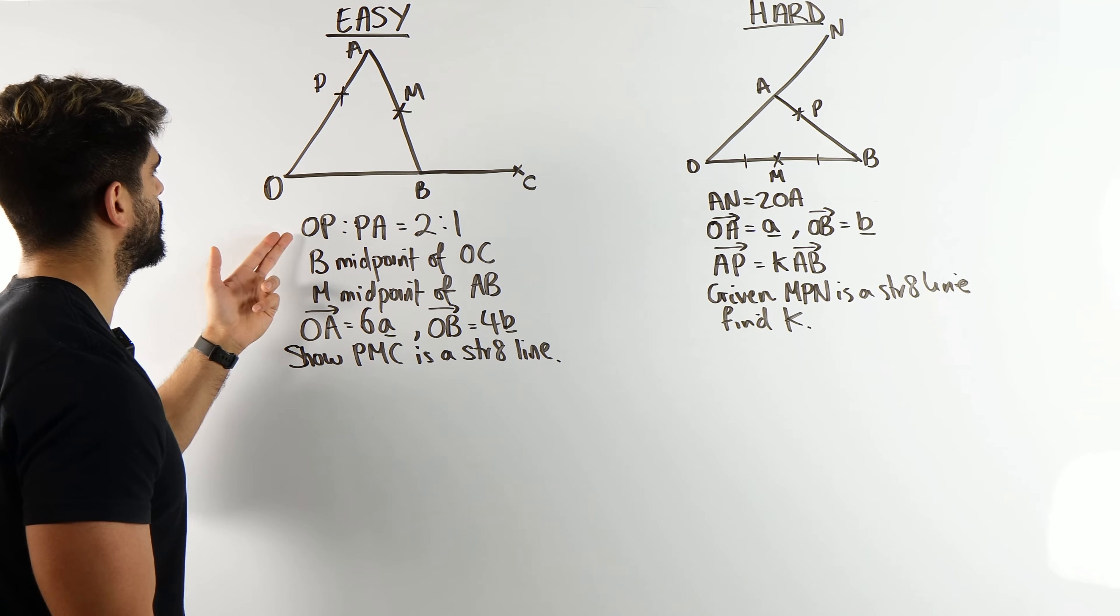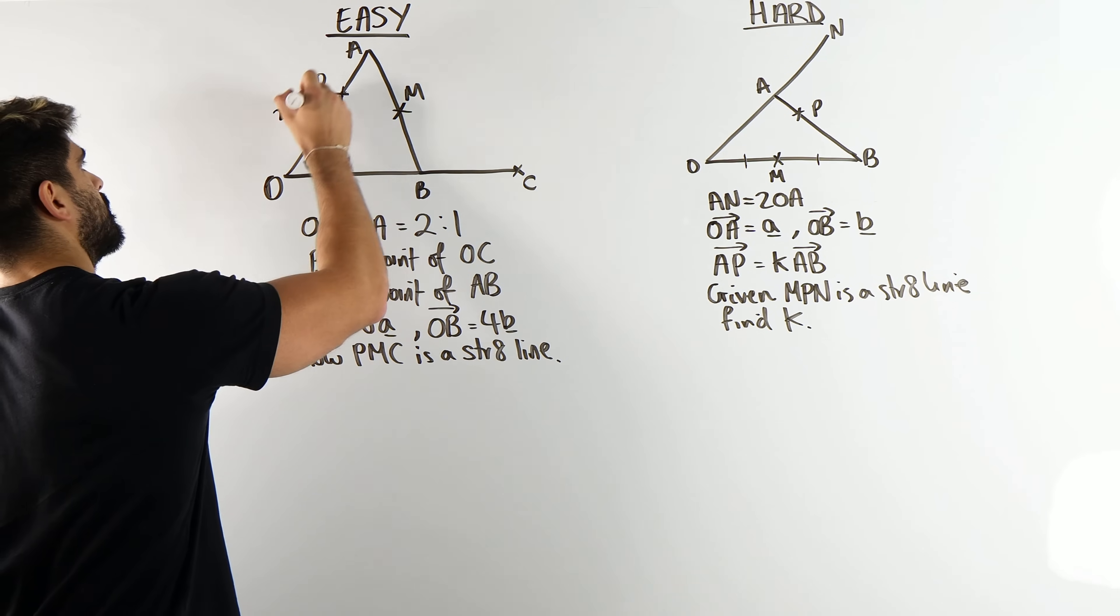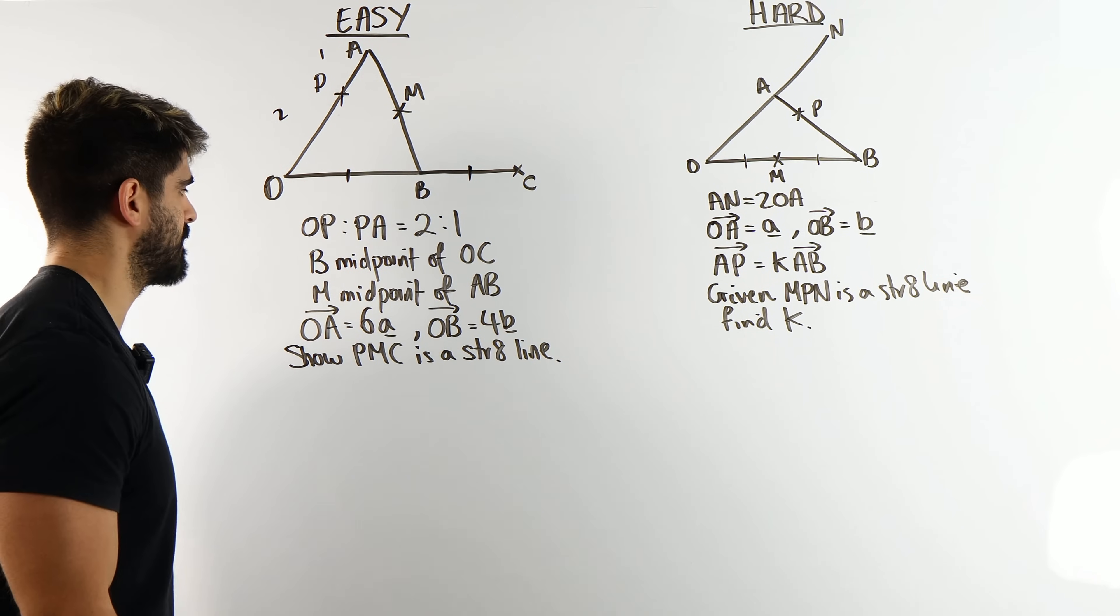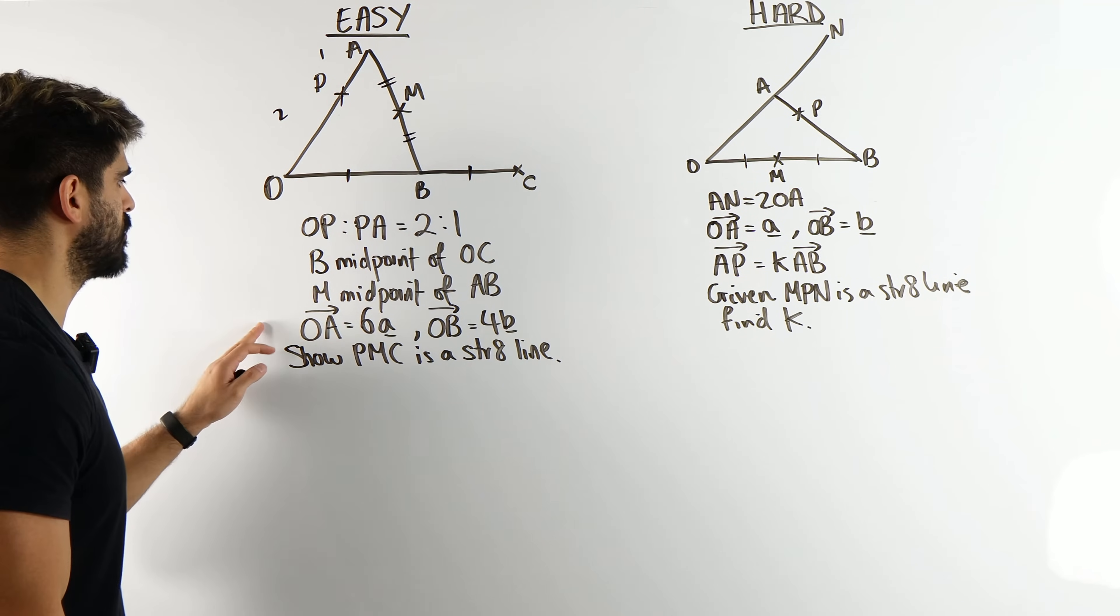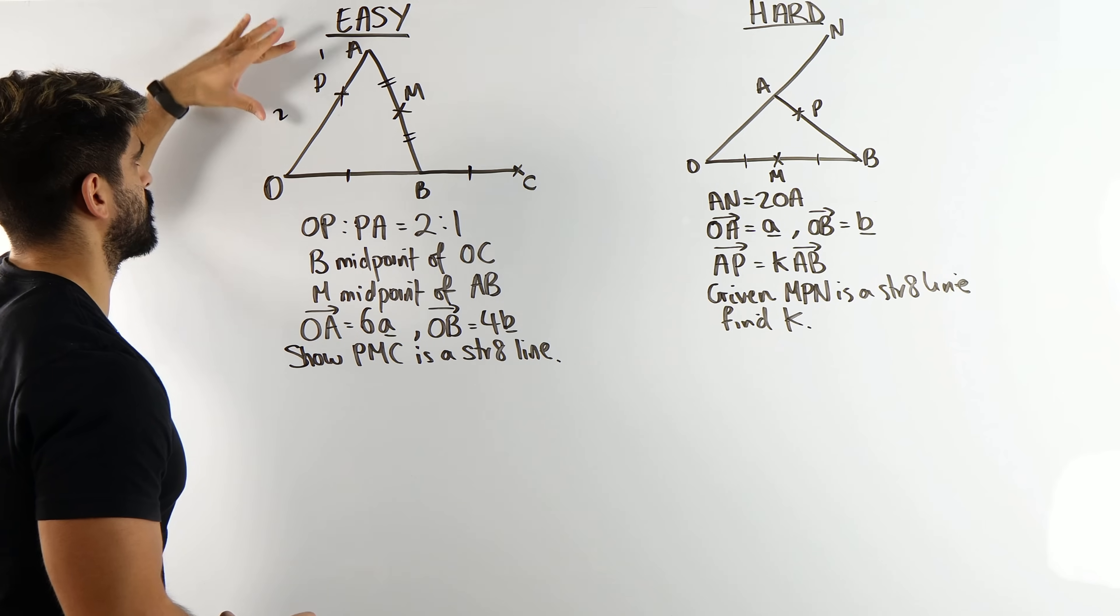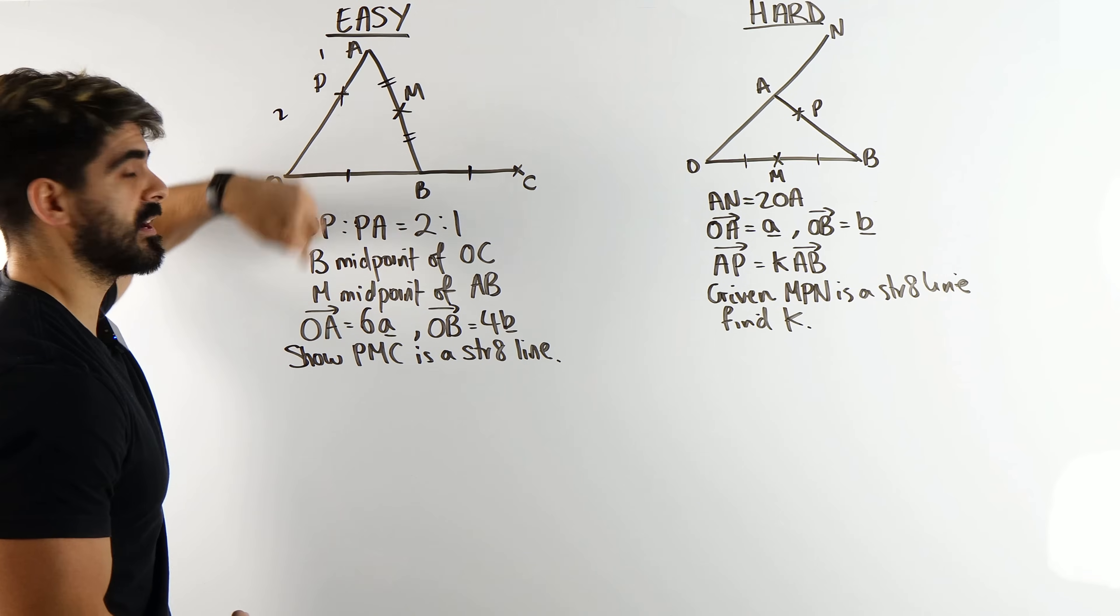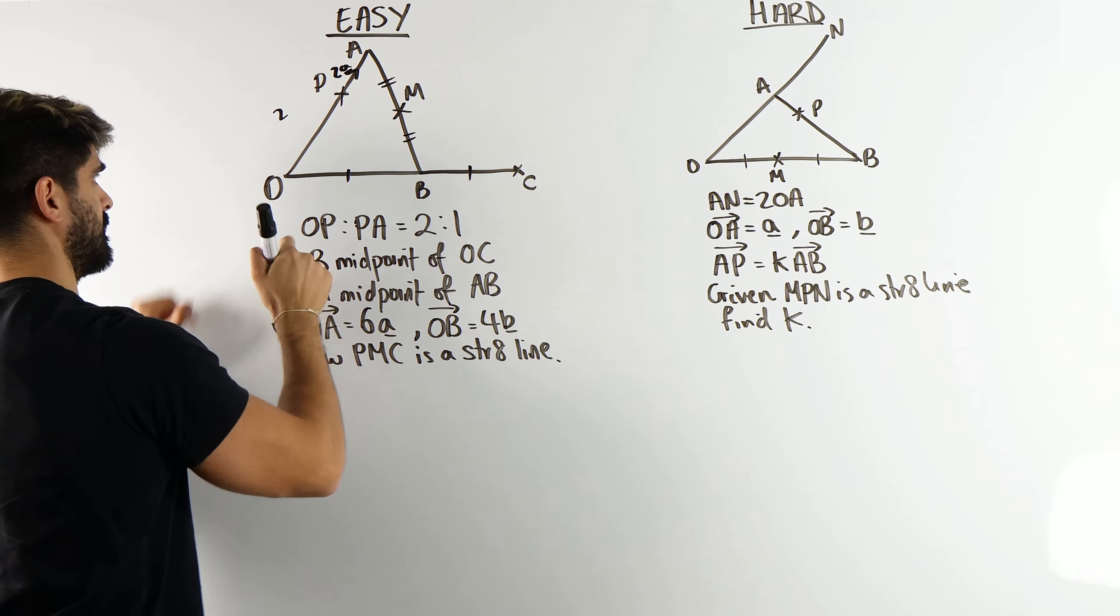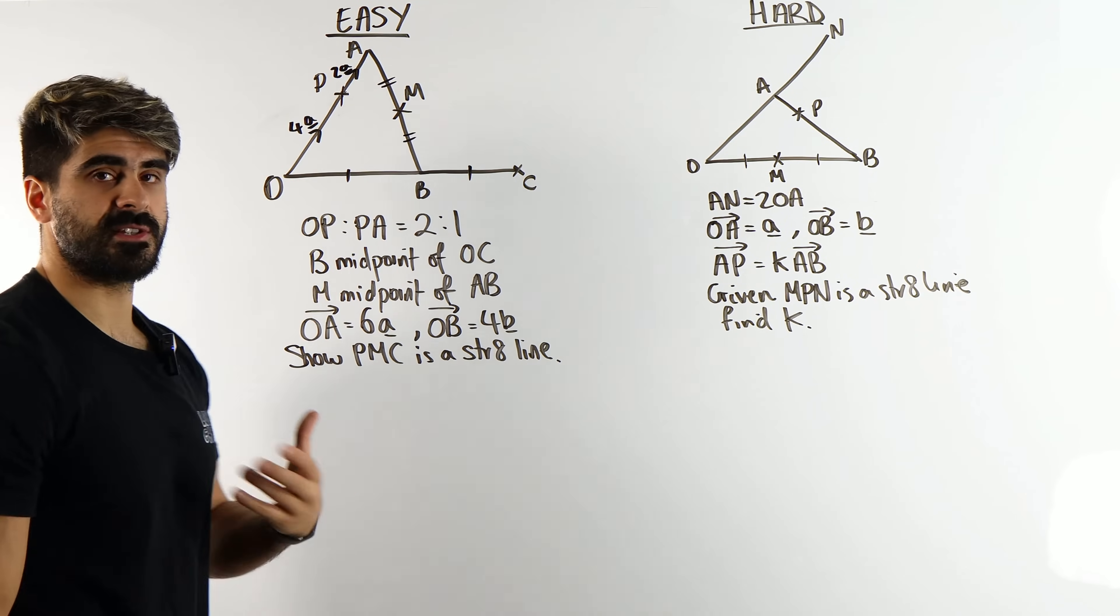In the easy question, we have a triangle. O to P, P to A is in the ratio 2 to 1. The first thing I'll be doing when I read this is trying to work out what these vectors are. If the ratio is 2 to 1, that's three parts. You're going to do 6A, which is this whole length, divided by 3, which is 2A. So this here is 2A because that's worth one part, and then two of those would be 4A.